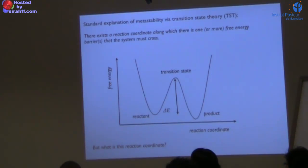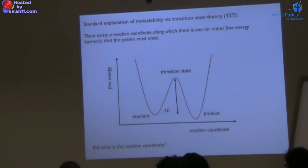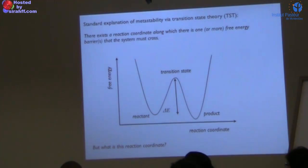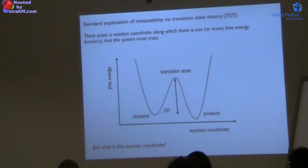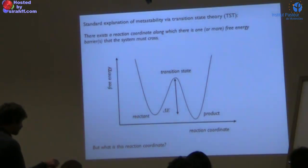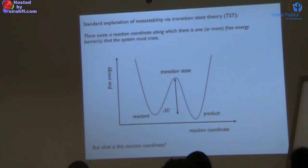The difficulty with this picture is that you need to define the reaction coordinate, which is by no means simple if the system or the process is complicated. It is not clear at all how you can project the system into a one-dimensional coordinate that makes this picture work. Part of what we are going to do today is to try to understand how we can define the reaction coordinate more precisely.